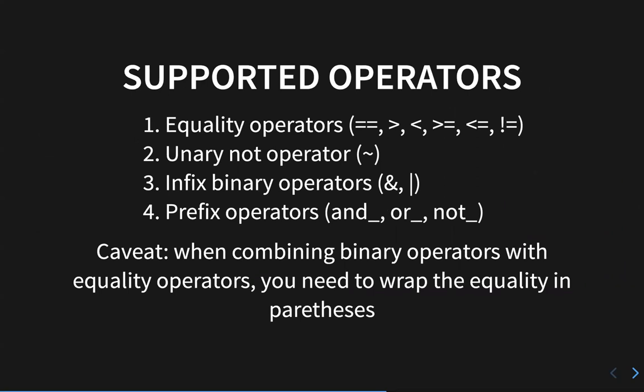There are a whole bunch of comparison operators you can use — equality and all the standard things are supported. If you would like to negate an operation or an attribute, you can put the unary not operator in front of it. There are infix binary operations, so you can do AND and OR. Or for more clarity there's and_, or_, not_ followed by underscores, because and, or, not in Python are keywords. You can also say and_ two things or and_ three things to combine them. The important thing is that because of how Python evaluates order of operations, if you want to use the AND and OR infix, you have to wrap them in parentheses.